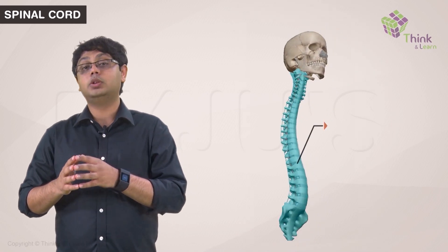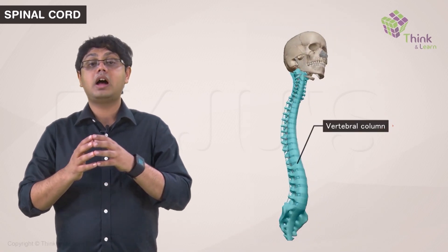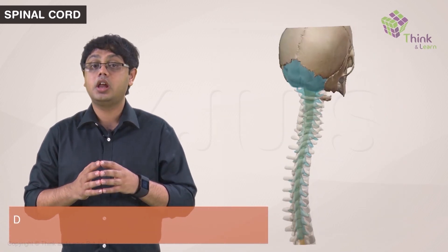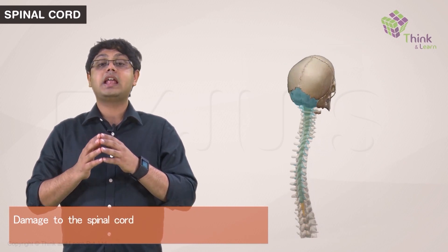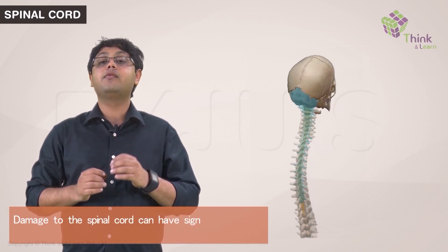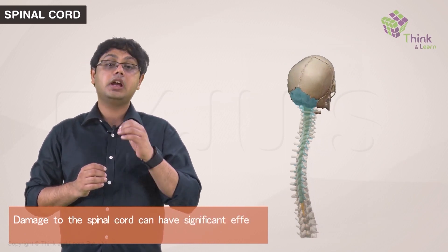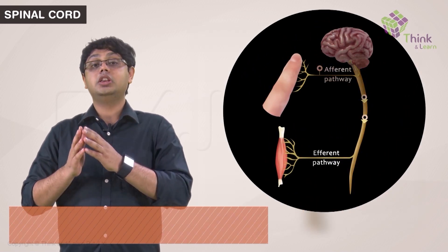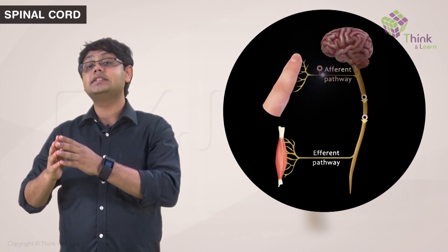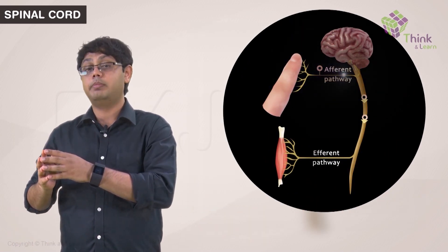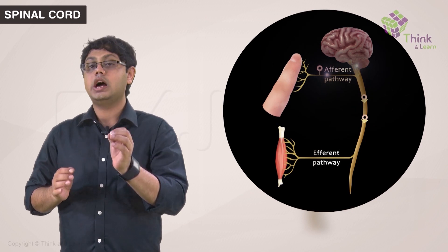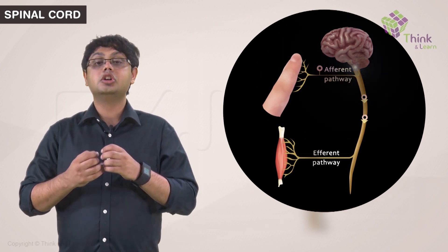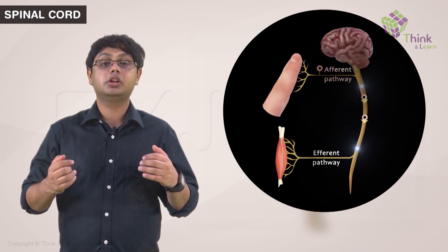It is encased by the vertebral column as well as the meninges, which protect it. Damage to the spinal cord can have very significant effects, including paralysis. This is because the nerves running through it carry sensory signals to the brain — the afferent pathway — and motor signals to the periphery of the body.